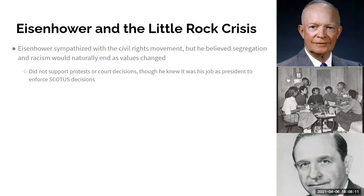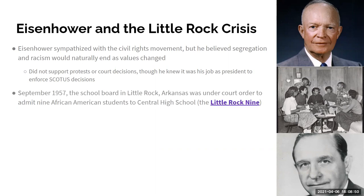Eisenhower didn't support protests or even passive movements initially, and he didn't support decisions like Brown. But he was a man of principle — a military man — who knew the difference between what was optional and what were orders. His orders as president were to enforce Supreme Court decisions. And he was a deeply decorated military man — Supreme Allied Commander in Europe during World War II — who knew how to carry out orders even if he didn't agree with them.